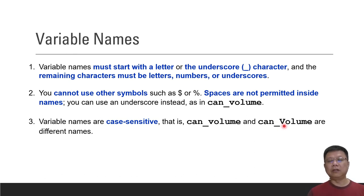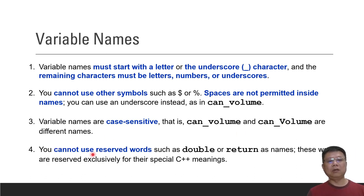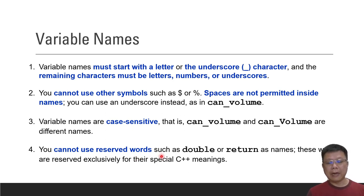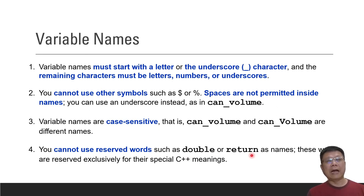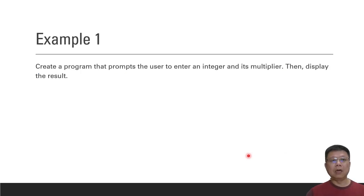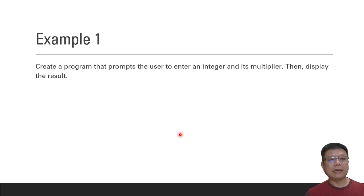If you mix the casing, the compiler will be confused about what you are calling. The fourth rule is to not use reserved words. You have to check the C++ libraries to see which words cannot be used — for example, 'double', 'return', 'int'. These are reserved and cannot be used as variable names.